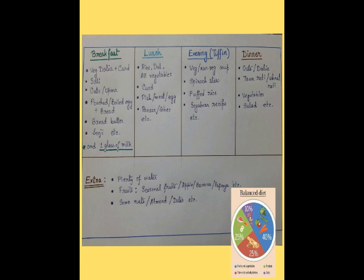For evening snacks, we can take any kind of soup — veg or non-veg — spinach stew, puffed rice, or a soybean recipe. For dinner, we can take oats or dahlia, and normally a tawa roti or wheat roti with some kind of vegetables and salad.